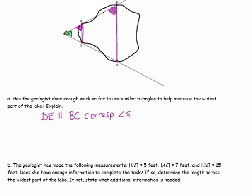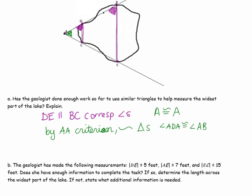Since DE is parallel to BC, we have corresponding angles that show a pair of congruent angles. Angle A is congruent to angle A, as it is part of both triangles. So by the angle-angle criterion, we have similar triangles — angle A is congruent to angle A, and angle ADE is congruent to angle ABC. Since we have two pairs of corresponding congruent angles, the triangles are similar and we can use this method.